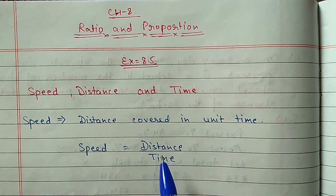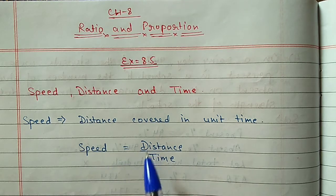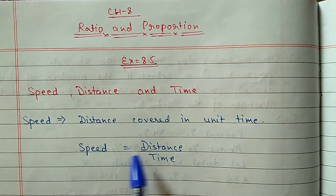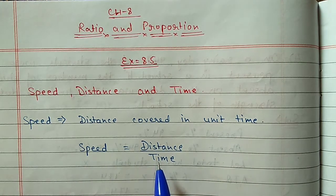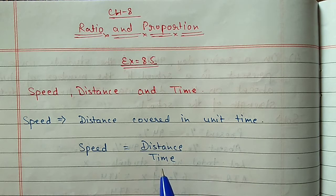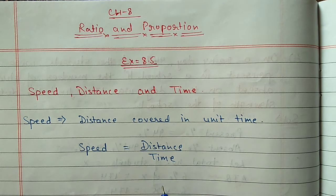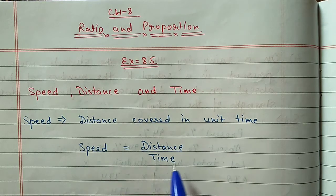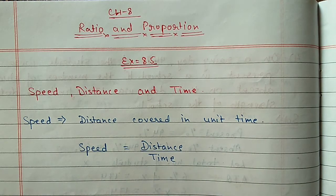Sometimes time and speed are given and you have to find out the distance. We have three things: any two will be given and the third you have to find out.